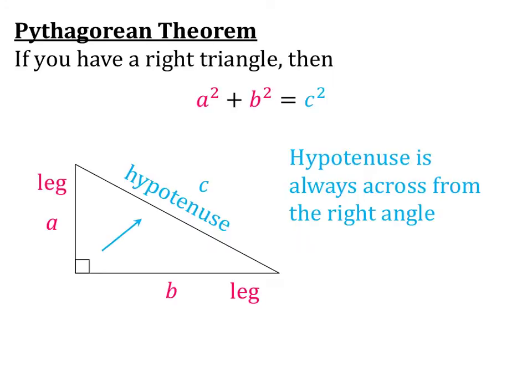The Pythagorean Theorem says that if you have a right triangle, then A squared plus B squared equals C squared. We know that A and B are the legs of the triangle—those are the two sides that are touching the right angle. And the hypotenuse, we always label as C. The hypotenuse is across from the right angle, and it's always the longest side.